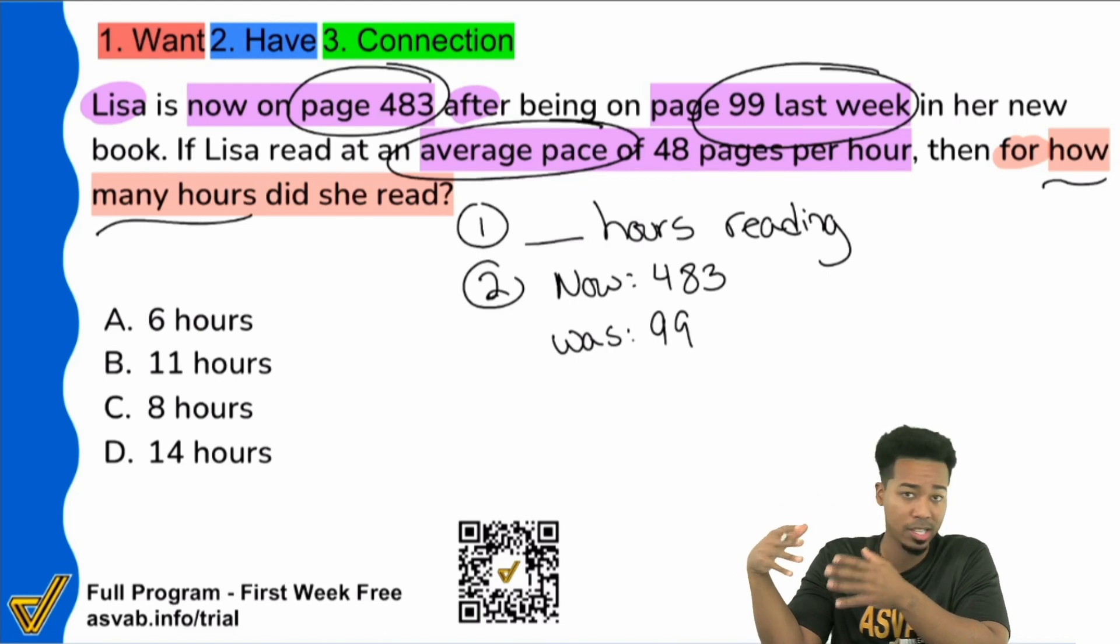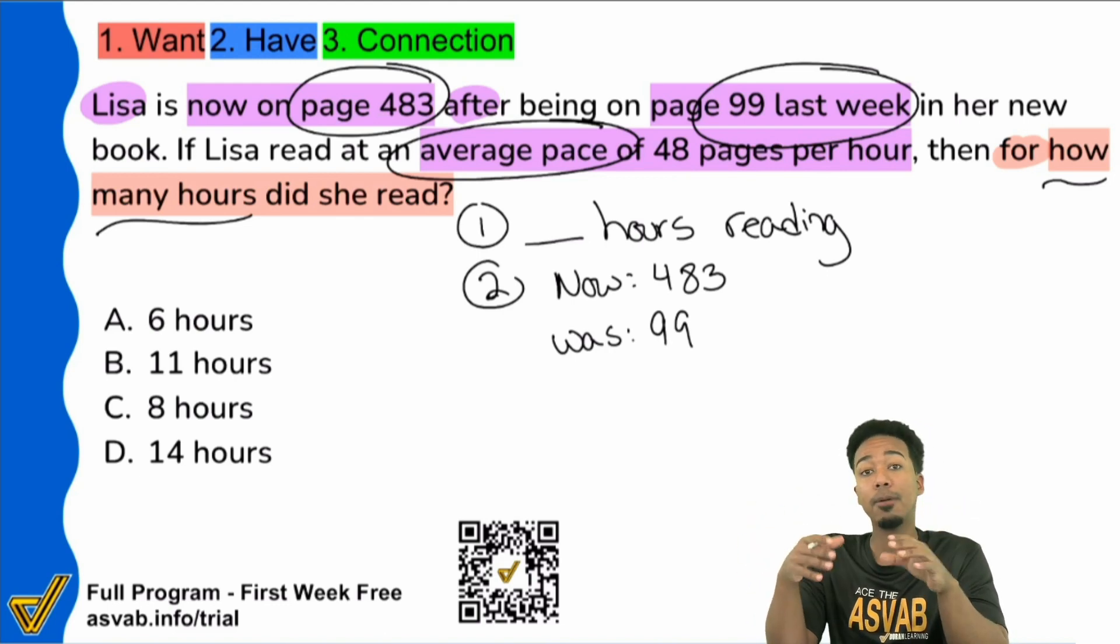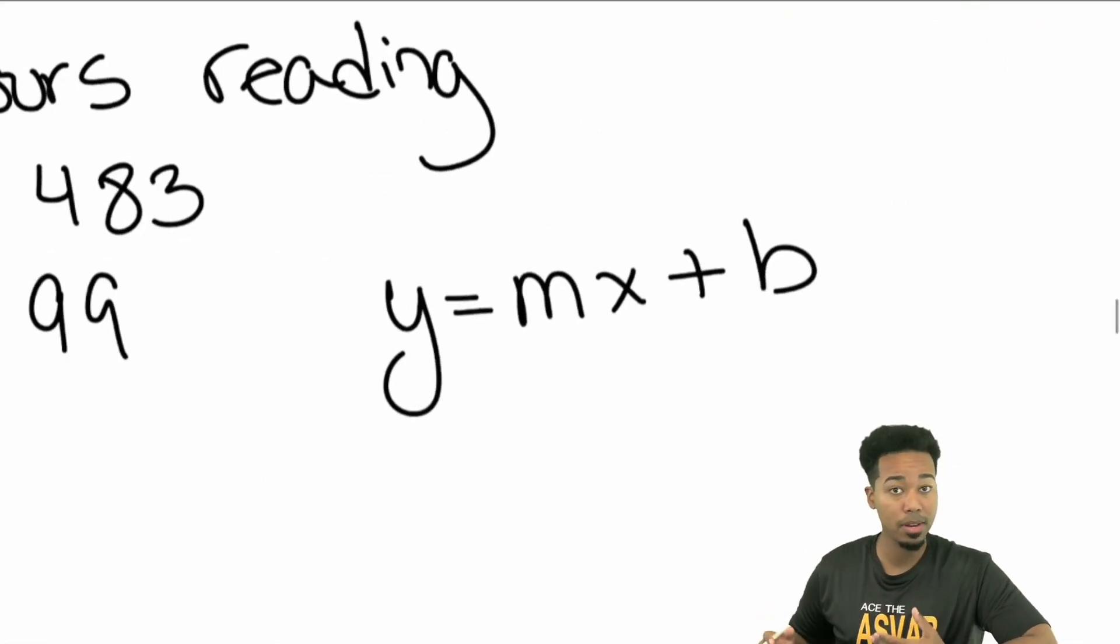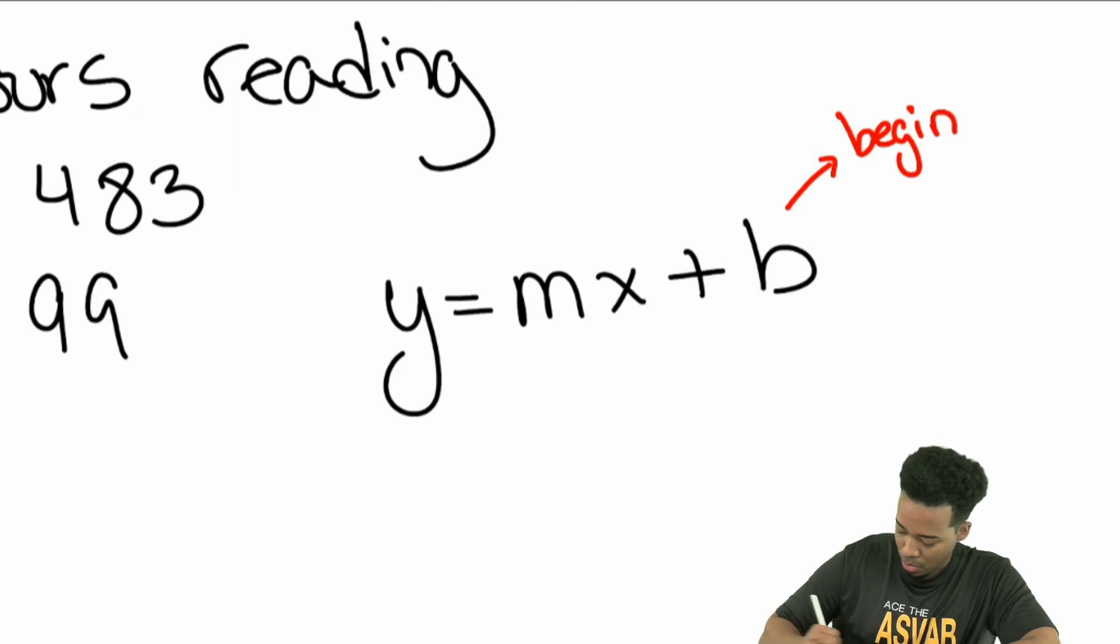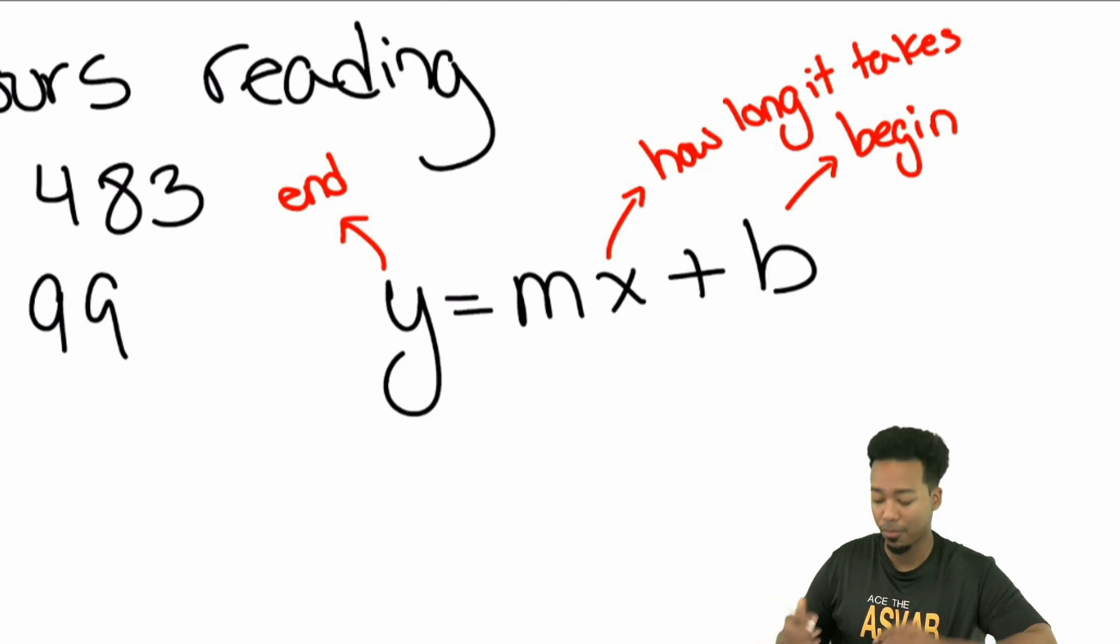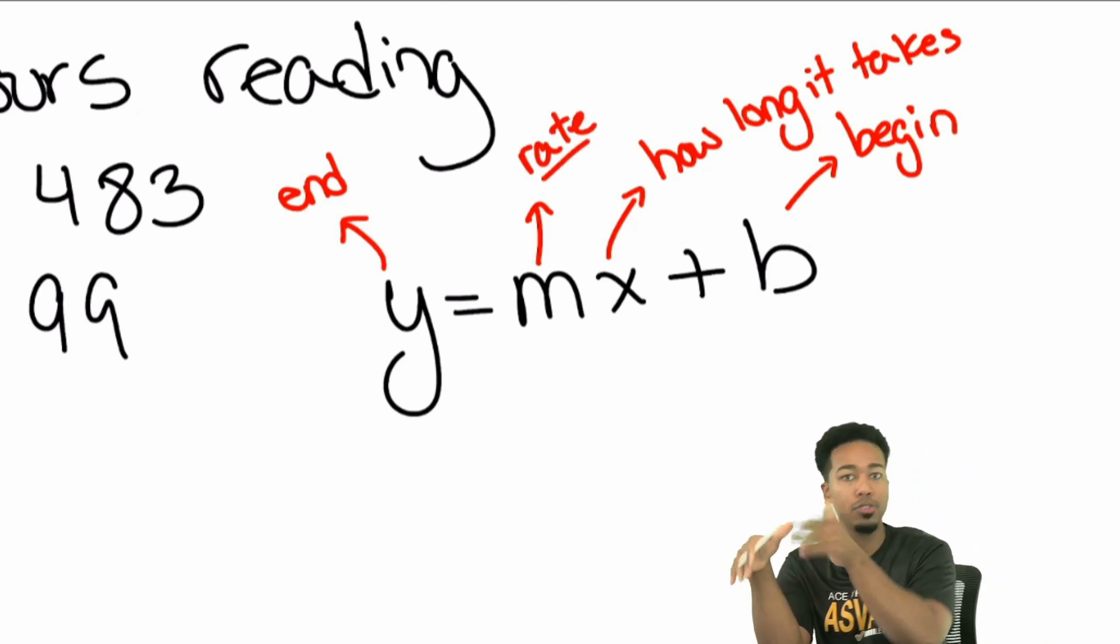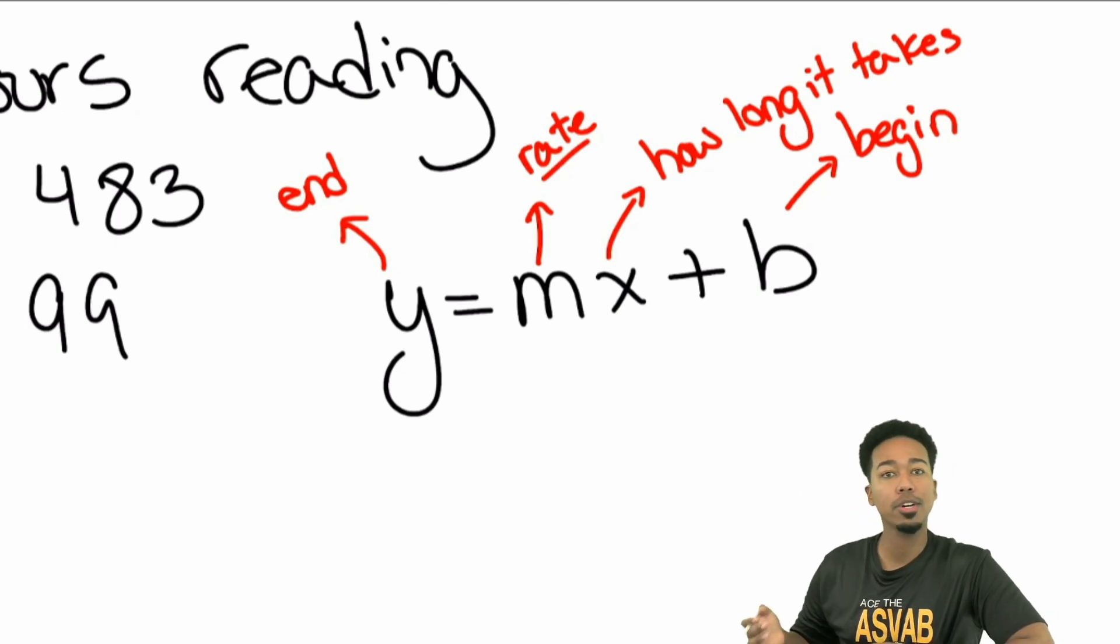You could potentially set this up as a distance rate time problem if you know what to do with the beginning and end, but you could still set it up with a linear equation. Let me prove to you that you can by reminding you of the formula y equals mx plus b. Remember, b is the beginning, y is the end, and x is how long it takes to get to the end. We're talking about the time frame, and m is your slope or in English your rate. mx, your slope in math, is your rate in real life. Now what we're going to do is we're going to set up this problem.